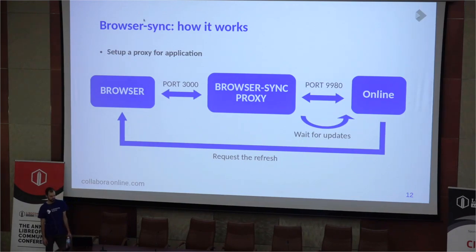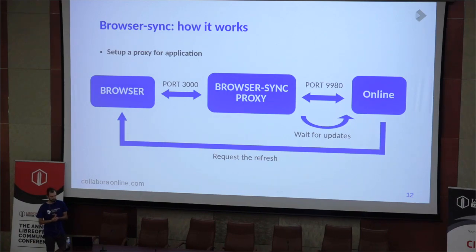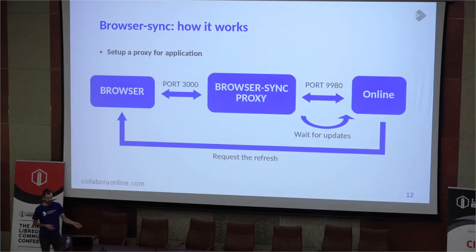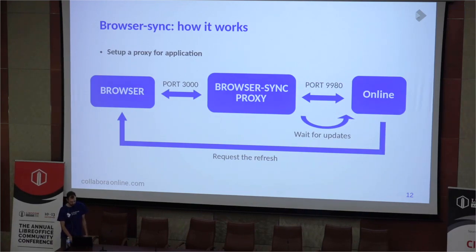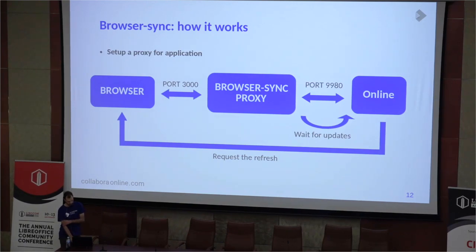So how does it work? BrowserSync can work in two modes: it can be a standalone server and serve some files from a directory, or set up a proxy. I use the proxy mode, and in the browser we open the application on another port — in this case 3000. BrowserSync in the background checks all the time if some files are updated, and if so it fires a refresh event to some JavaScript which is served on the proxy application, so it can reload part of or the whole window.